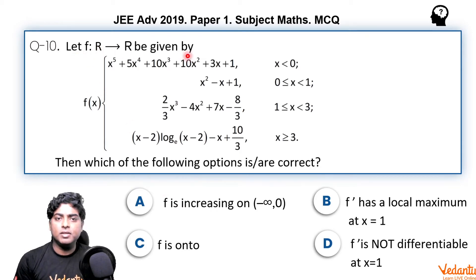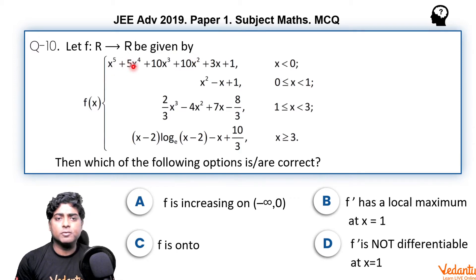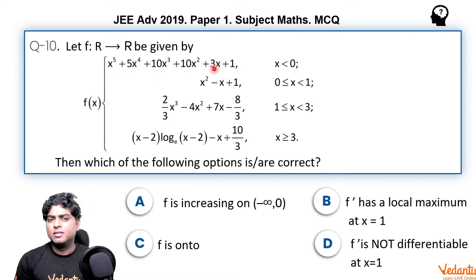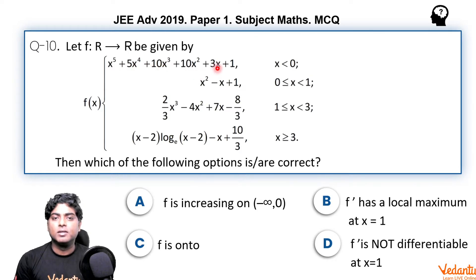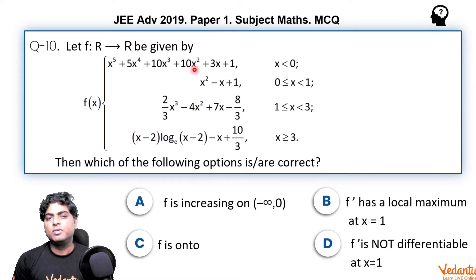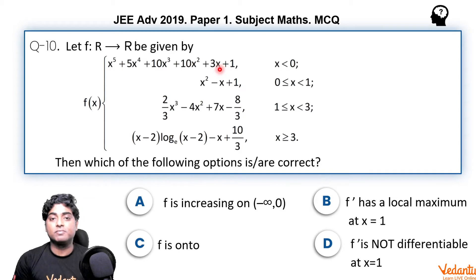Let f: R→R be given by f(x) = x⁵ + 5x⁴ + 10x³ + 10x² + 3x + 1. It looks like the expansion of (x+1)⁵ — 5C1, 5C2 gives 10 — but the coefficient of x is 3, creating a problem. If it were 5x it would be directly (x+1)⁵. We can write it as (x+1)⁵ minus 2x, since 3x = 5x − 2x.